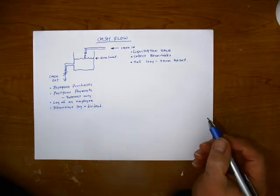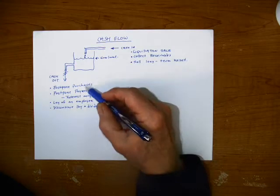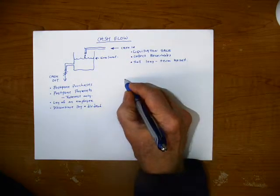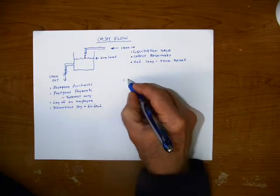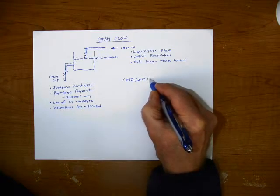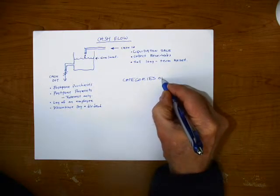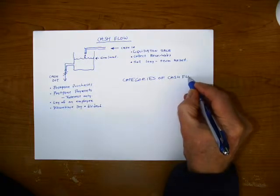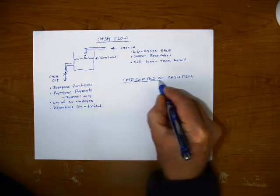So these are ways that cash can come in and cash can go out because we do have to maintain the specific level. Now cash flow is divided up into three categories. Categories of cash flow.